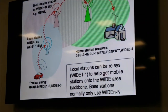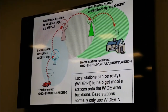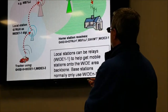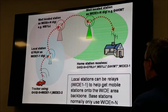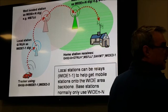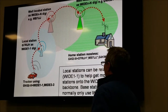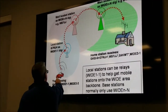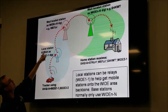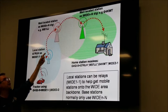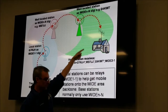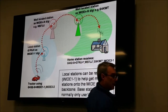Here's a picture of digipeating. The car is low power — maybe five watts. A local station hears it and digipeats it. Another station hears that one and digipeats it. And if that station is also an iGate, it puts the position on the internet. That's how someone across the county can hear the little mobile.